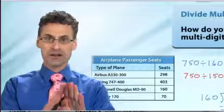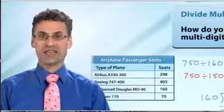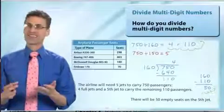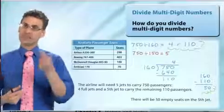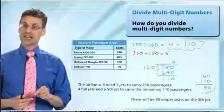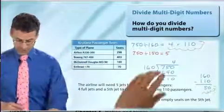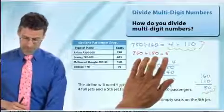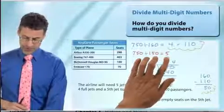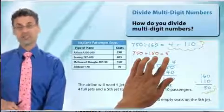Because I want us to ask, is our answer reasonable? Well, the great thing is that we actually took that little moment to find an estimate at the very beginning when we started thinking about this together. And now let's see if that estimate is, in fact, reasonable with our answer. Well, remember, we estimated by finding a compatible number of 150 that we would need five jets. And what do we see now?